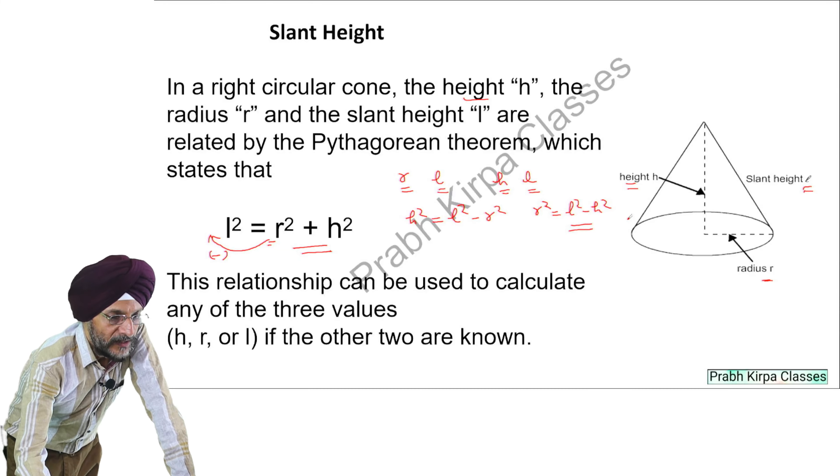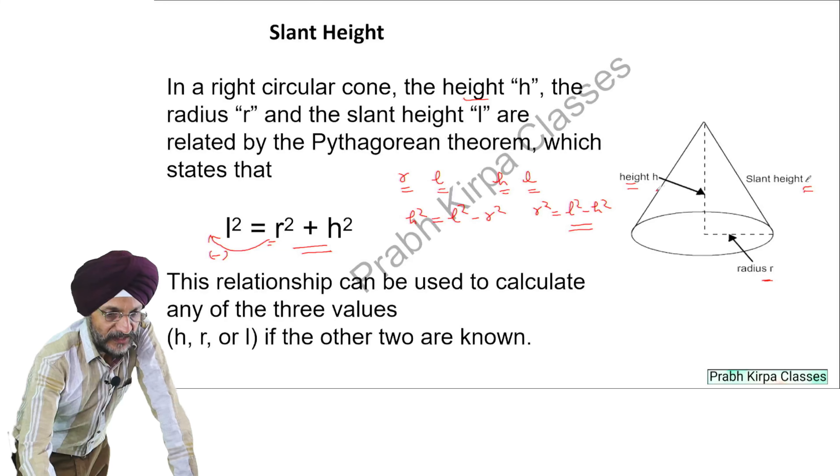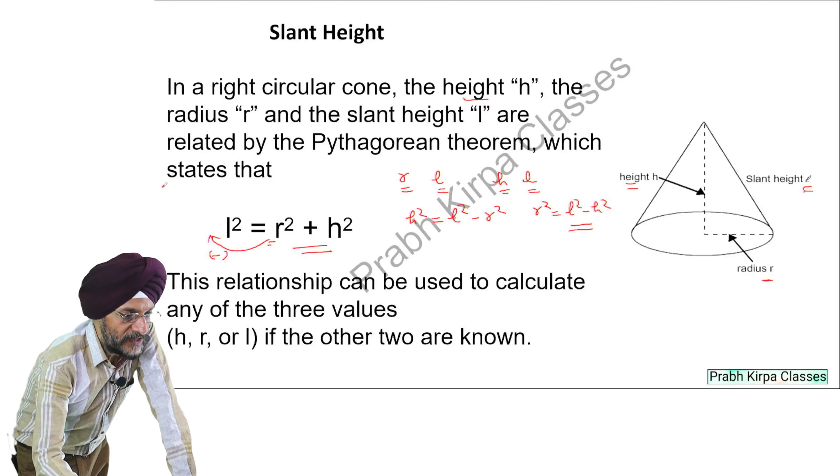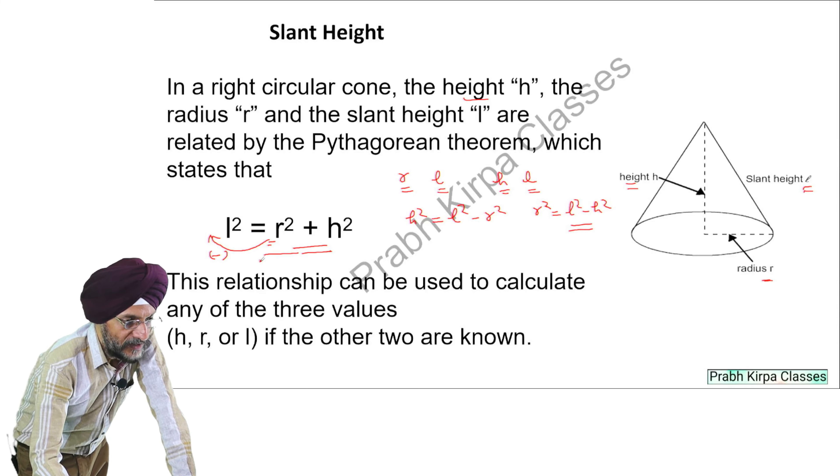You can see that height H, slant height L, and radius R are related to each other and the formula is this one.